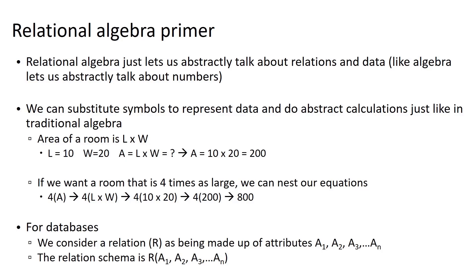Applying this to databases, instead of thinking of relations as having names like student, course, or professor, we're just going to give them generic names like R. And instead of talking about individual attributes like PeopleSoft ID, first name, last name, and phone number, we're just going to call our attributes A1, A2, A3, and so on. So our relation schema is generically going to be R(A1, A2, A3, ...) until we've captured all of our attributes.